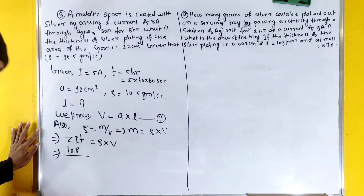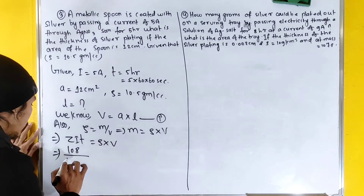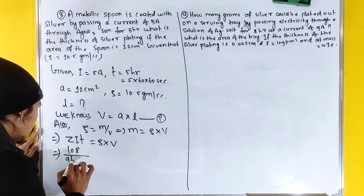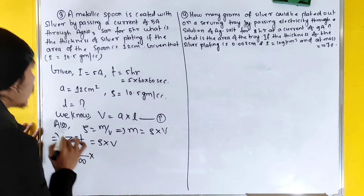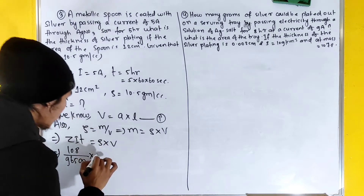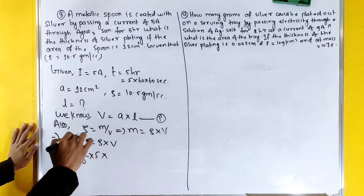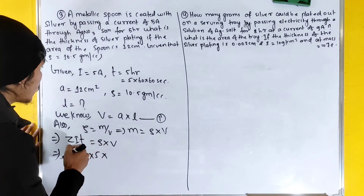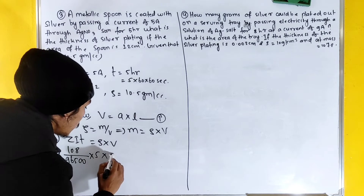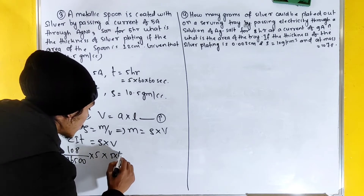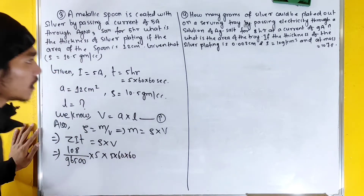Mass is calculated as: 108 divided by 96500 multiplied by 5 into 60 into 60, using the electrochemical equivalent formula m = (E/F) × i × t.